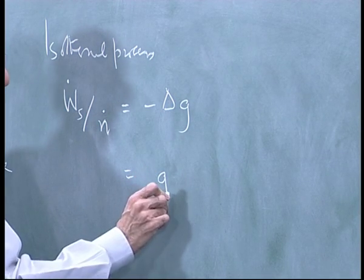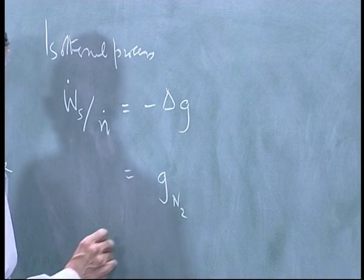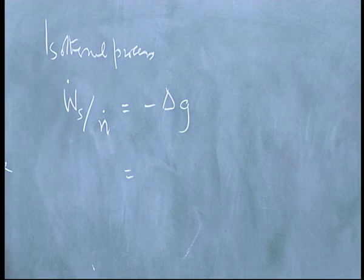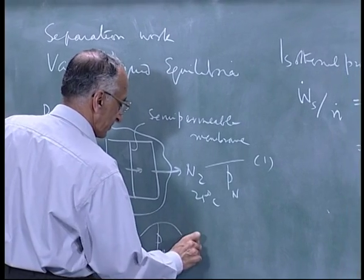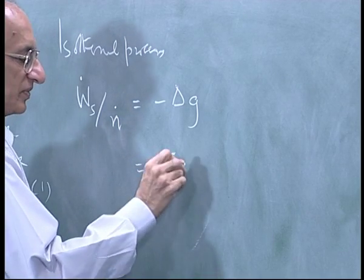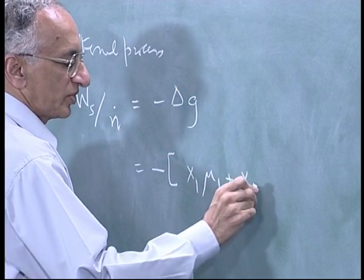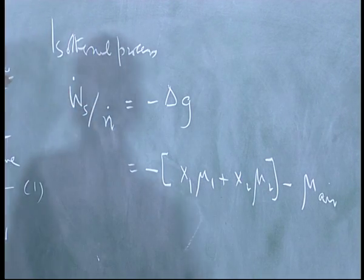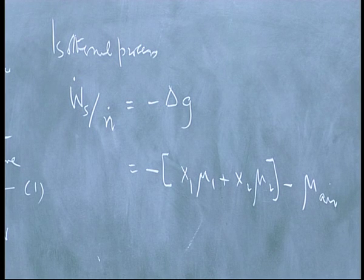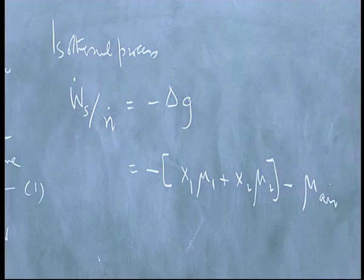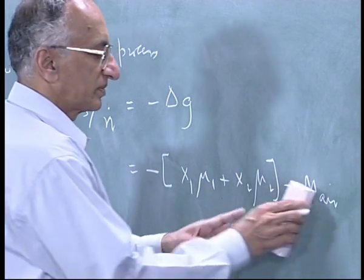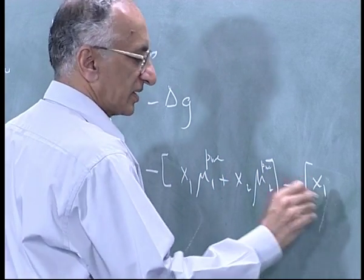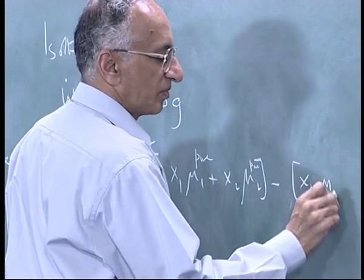So delta G is simply G of nitrogen or mu nitrogen. Sorry. We will call nitrogen as component 1. This will be component 2. So it is minus of x1 mu1 plus x2 mu2 minus mu air. Actually sorry, this is x1 mu1 pure.